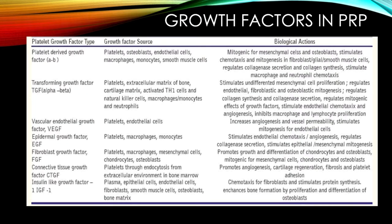There are about seven — some people say up to twelve — growth factors in PRP. The predominant ones are platelet-derived growth factor, TGF-beta, VEGF, epidermal growth factor, fibroblast growth factor, connective tissue growth factor, and insulin-like growth factor. These are predominantly where the bioactive effects of PRP come from.